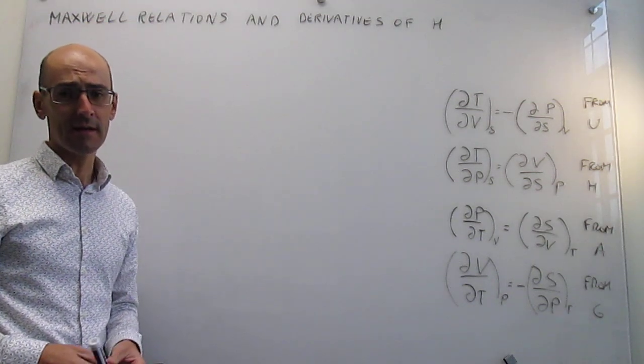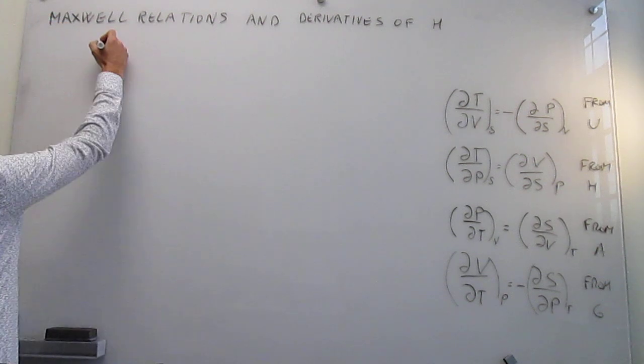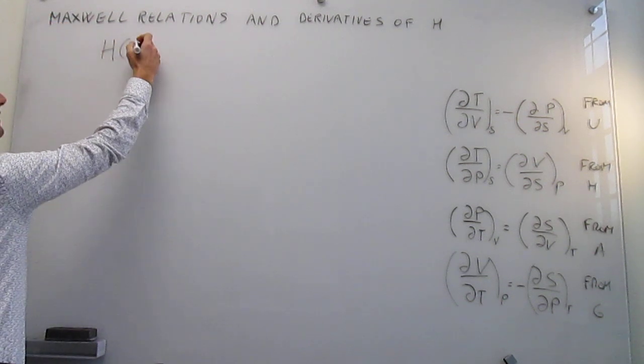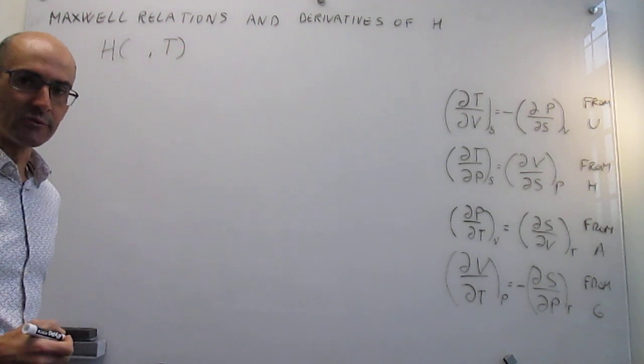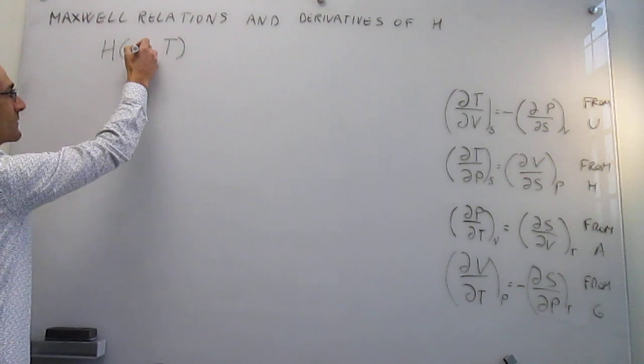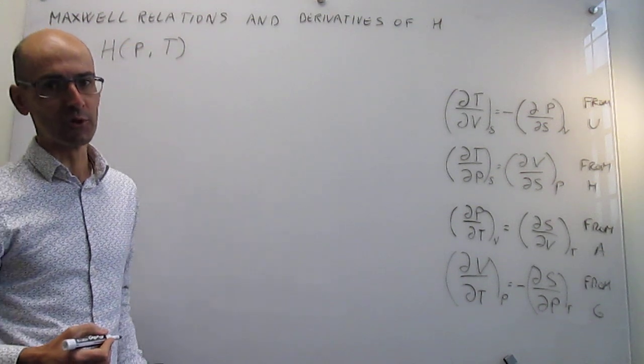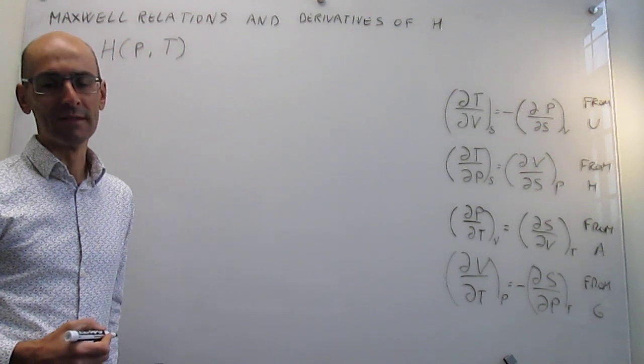Let's try to think of a way to express enthalpy as a function of easy-to-control variables. The temperature is an easy-to-control variable for sure, but then pressure is also something that we can control in the lab with relative ease.